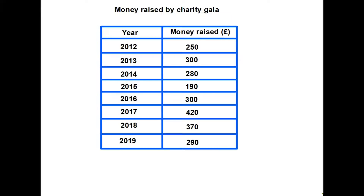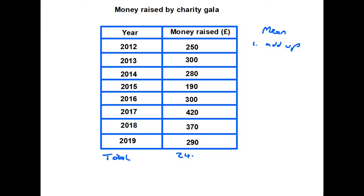Let's look at a typical example. This table is about the amount of money raised by a charity gala. One column shows the years the gala was run, and the second column shows how much money was made each year. To find the mean, step one is to add up all the numbers in that column. When we add them all up, we find the total comes to £2,400 — the total amount raised across all these years.